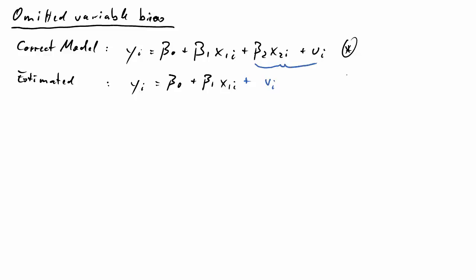This clip will demonstrate why omitting a relevant variable is a bad thing. We'll start with a correct regression model, dependent variable y being a function of two explanatory variables, x1 and x2. But perhaps you're only interested in beta 1, so someone decides to drop x2. We only have x1 as explanatory variable and a new error term vi that also contains the effect of x2. This is our estimated model.